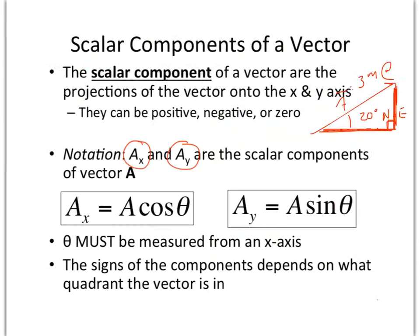Going back to the slide: if you want to find the x-component, take the full vector times the cosine of theta. If you want to find the y-component, take the full vector times the sine of theta. This only works if theta is measured from the x-axis — measuring from the y-axis will flip everything around. Also, Ax and Ay may have signs depending on what quadrant the vector is in; as long as you know the direction the vector is pointing, you can apply signs to those values.